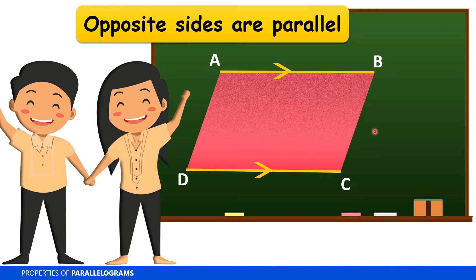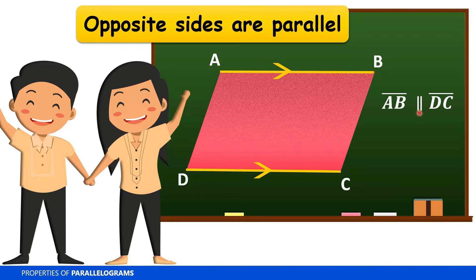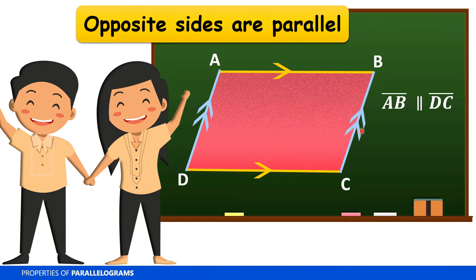If we are going to show that using symbols, we have segment AB is parallel to segment DC — you may interchange the letters that represent the endpoints. We also have another pair of parallel sides: side AD is parallel to side BC. In symbol, segment AD is parallel to segment BC.